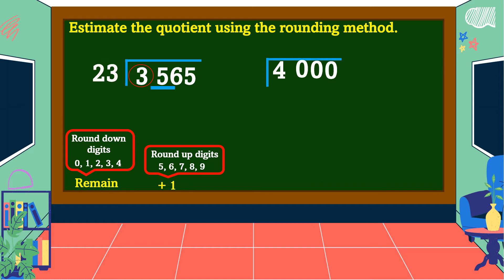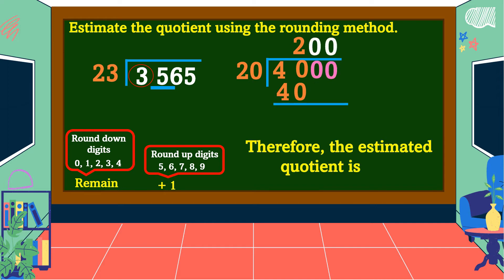Next, round off 23 to the nearest tens, which equals 20. Then divide 4,000 by 20. 40 divided by 20 is equal to 2. 2 times 20 is 40. 40 minus 40 is 0. We have two 0s remaining in our dividend, which we copy to our quotient. Therefore, the estimated quotient is 200.